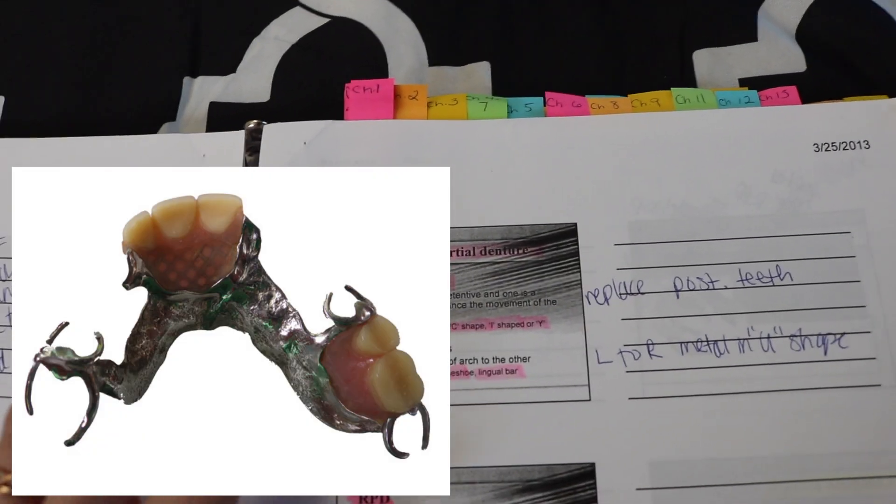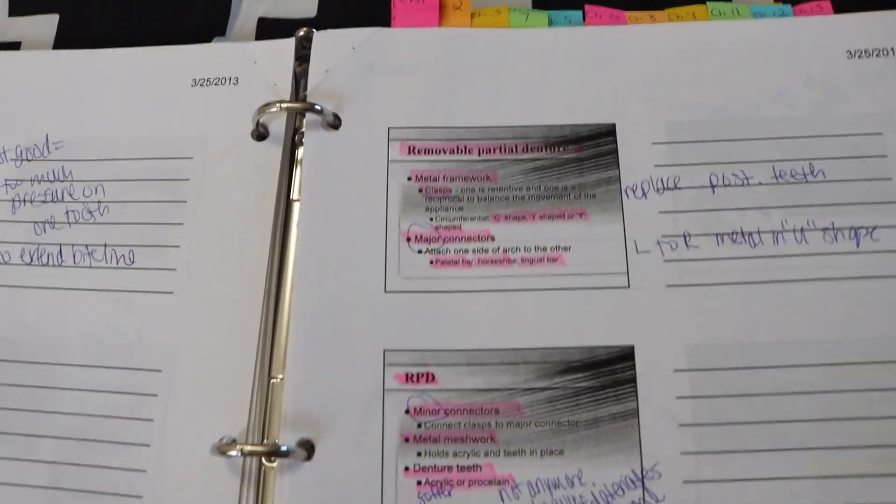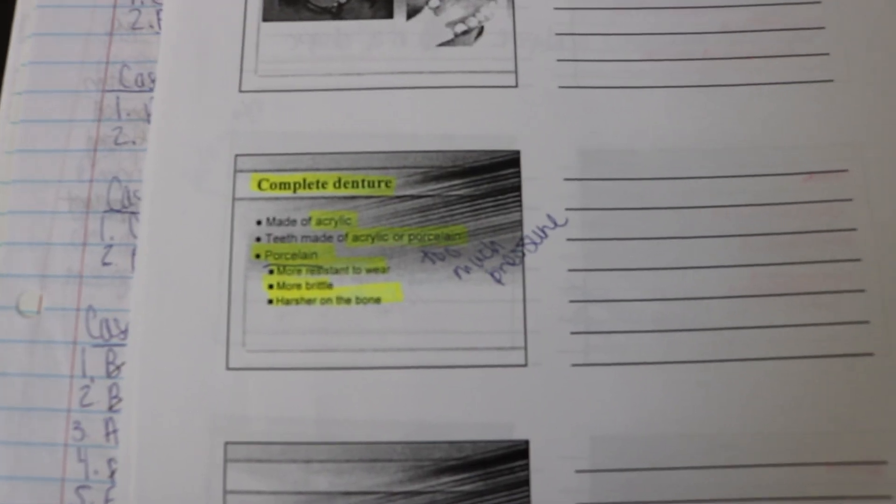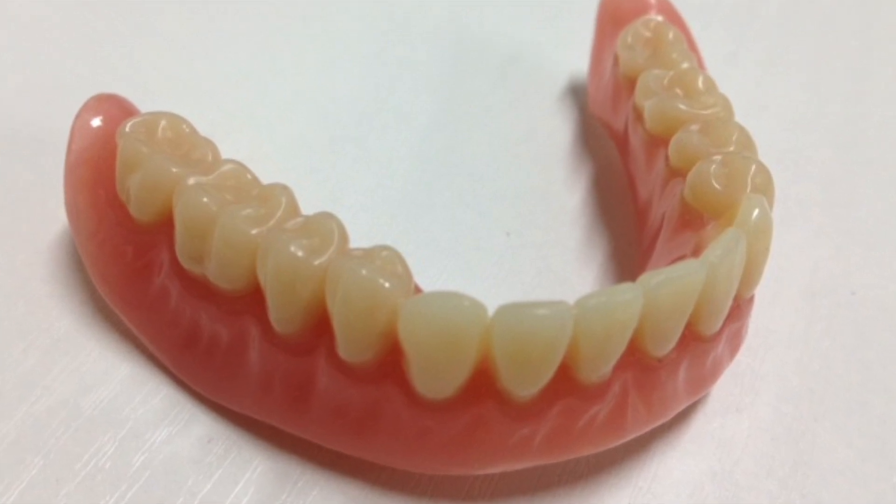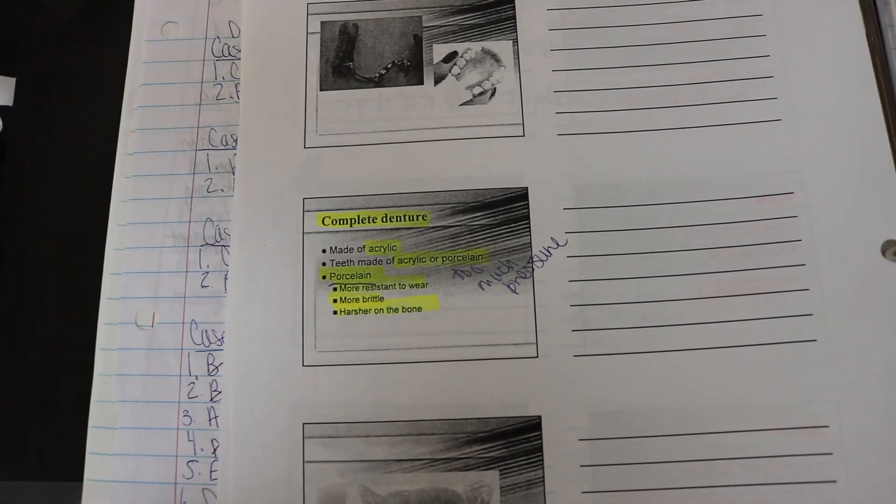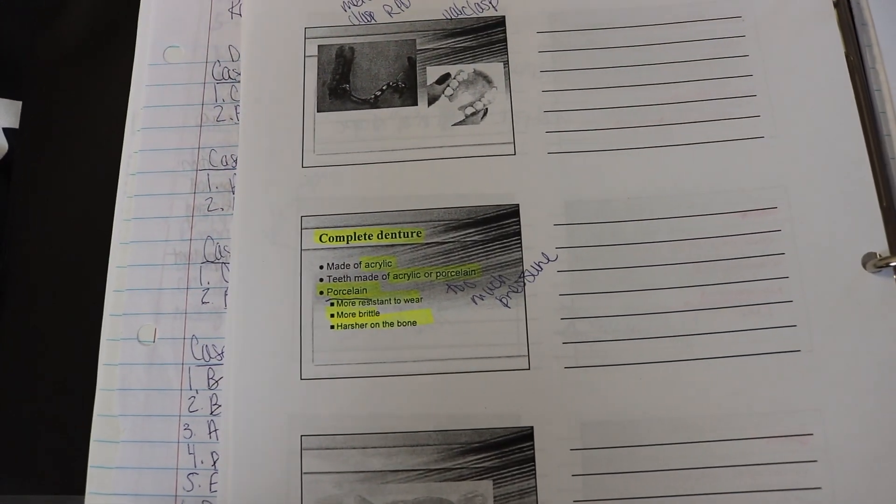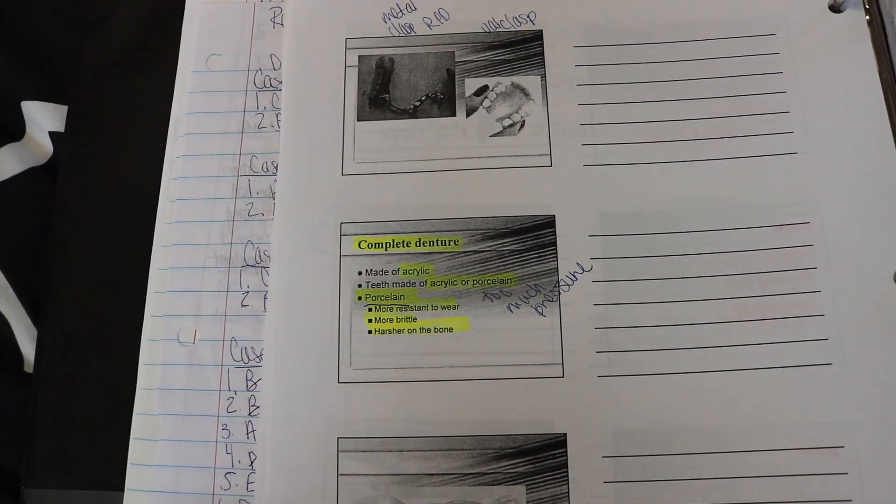Removable partial dentures are usually to replace posterior teeth but people can get them for the anterior teeth as well. A complete denture, a full denture, is made out of acrylic. Most of the time for dentures they will use acrylic teeth, it's not very common that they will use porcelain. Porcelain is super strong, it's very resistant to wear but it's just like if you were to have a porcelain dish if you hit it just right it can become very brittle.